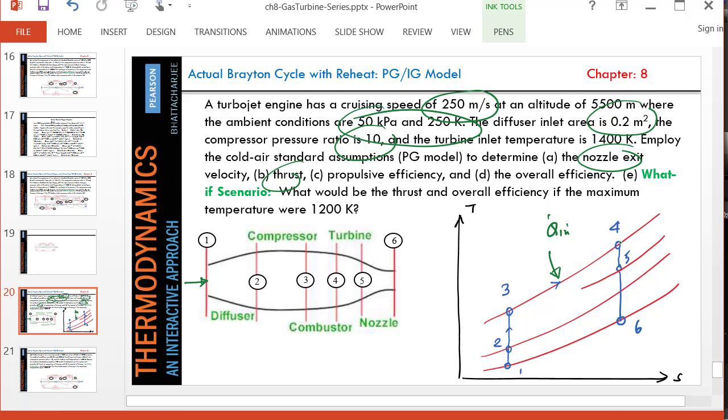State five is isentropic to state four and also the turbine between four and five produces just enough power to supply power for the compressor. In other words, h4 minus h5 must equal h3 minus h2. So this energy balance will help us figure out state five.